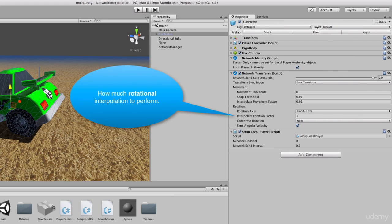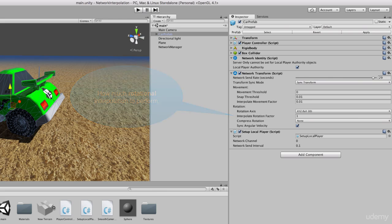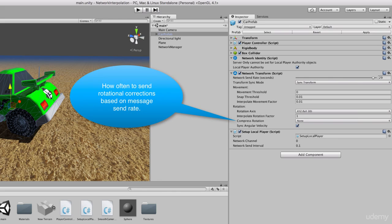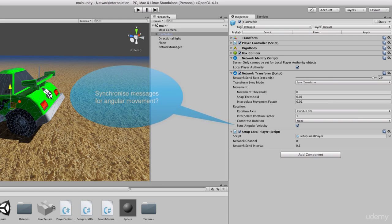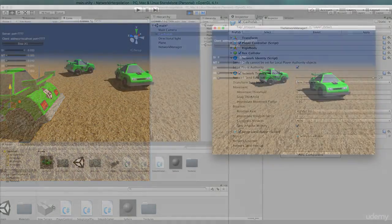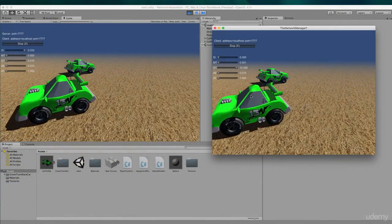Rotations in a networked object can also be interpolated, where you can choose to compress the rotational corrections with respect to the message send rate, or you can turn off the angular sync velocity altogether. In the next lecture we'll take a look at how these values work in practice.